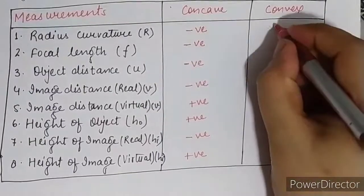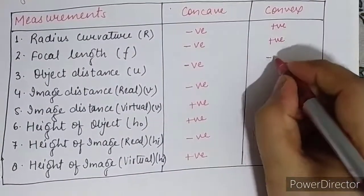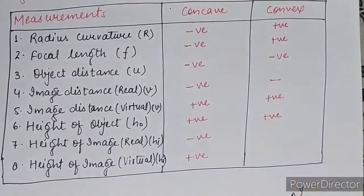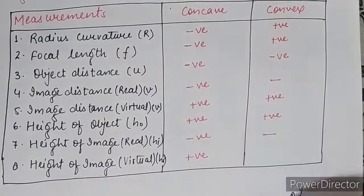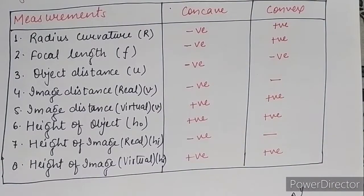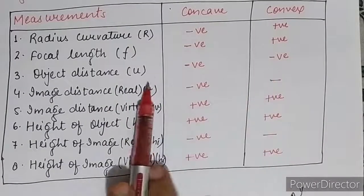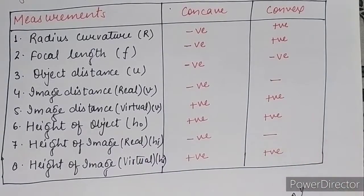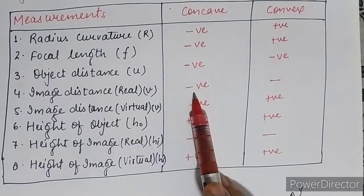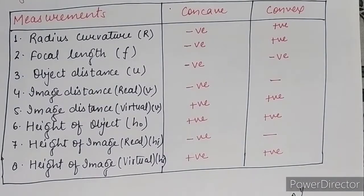So for the convex mirror in the table: radius of curvature positive, focal length positive, object distance always negative, real image does not form, virtual image distance positive, height of object always positive, height of real image does not form, height of virtual image is always erect so positive. In the convex mirror, only the object distance is negative and all remaining are positive. Regarding yesterday's mirror equation discussion, in the concave mirror object distance, real image distance, and focal length are all negative, so we took the negative as common and cancelled.